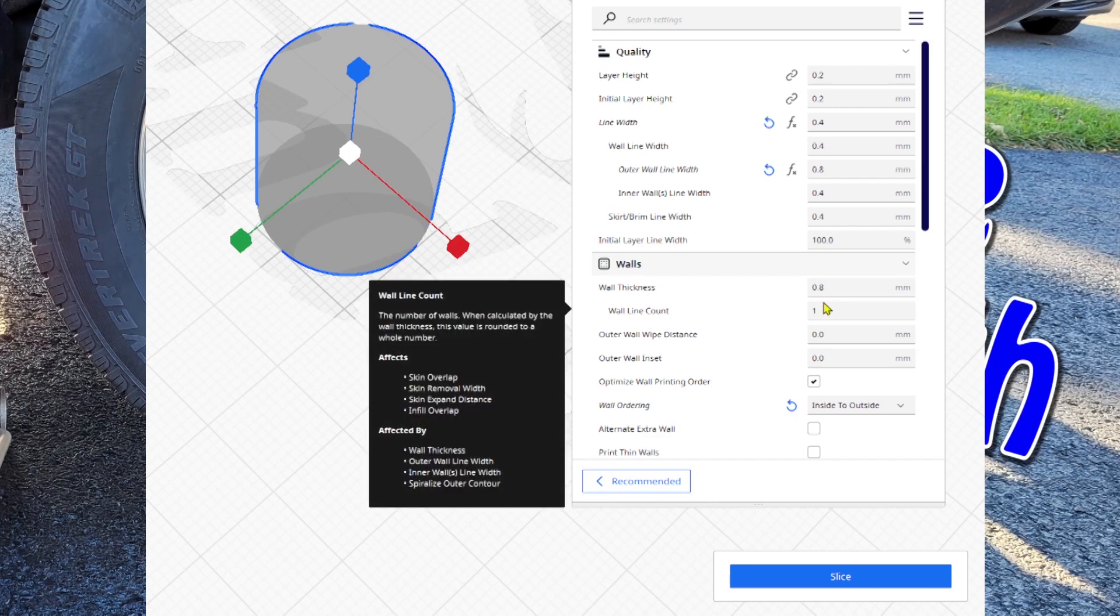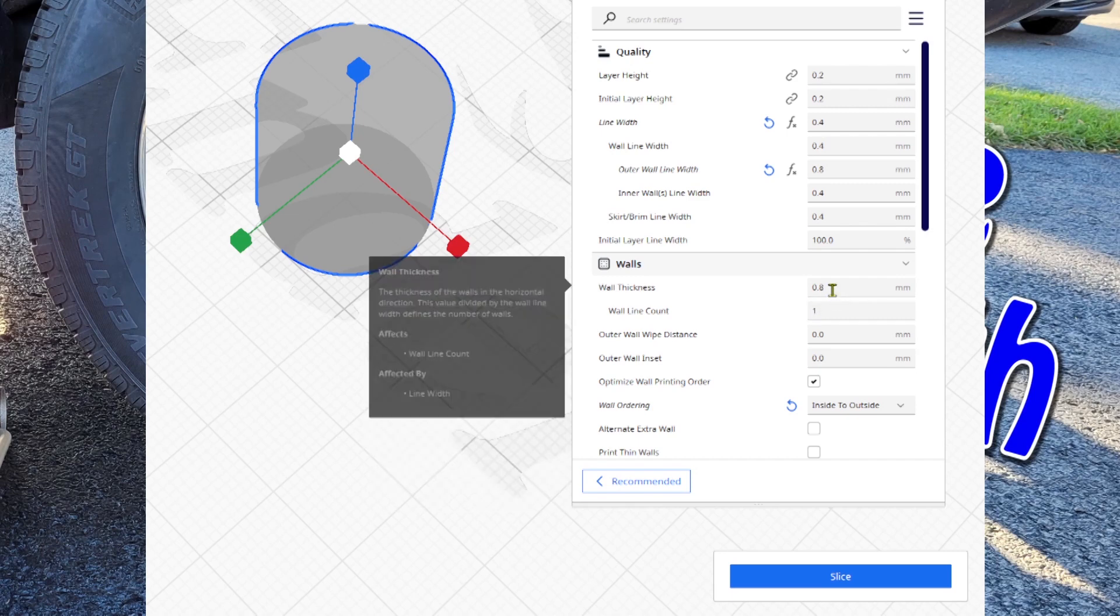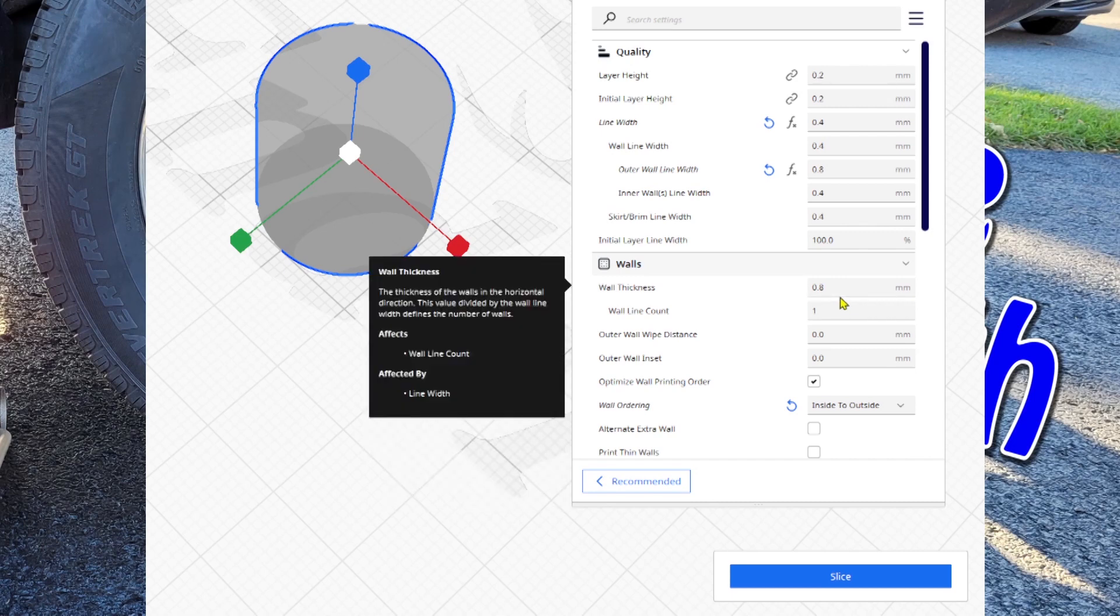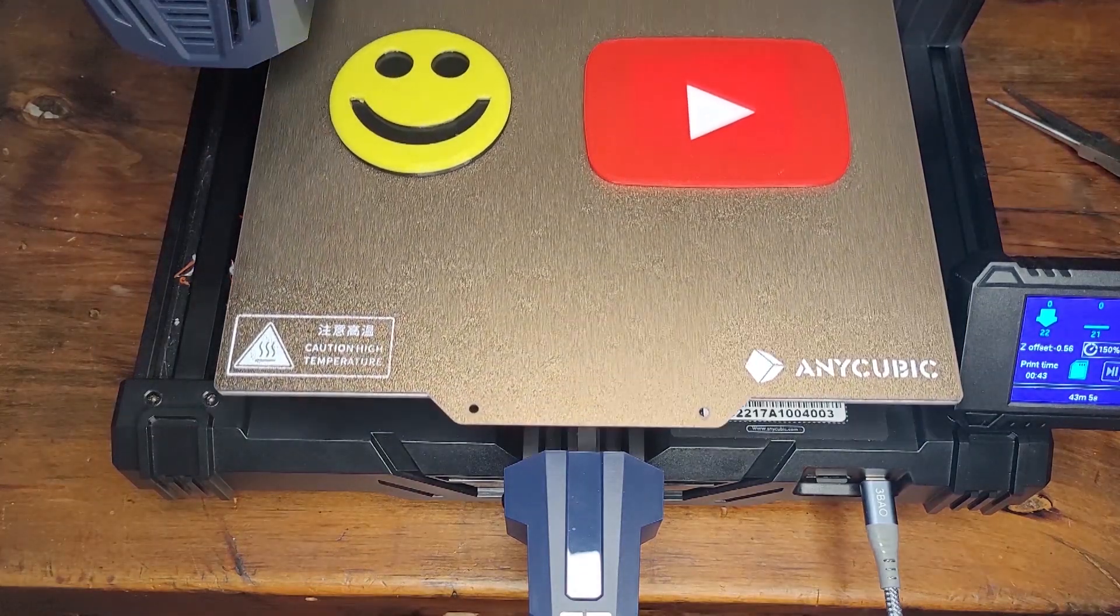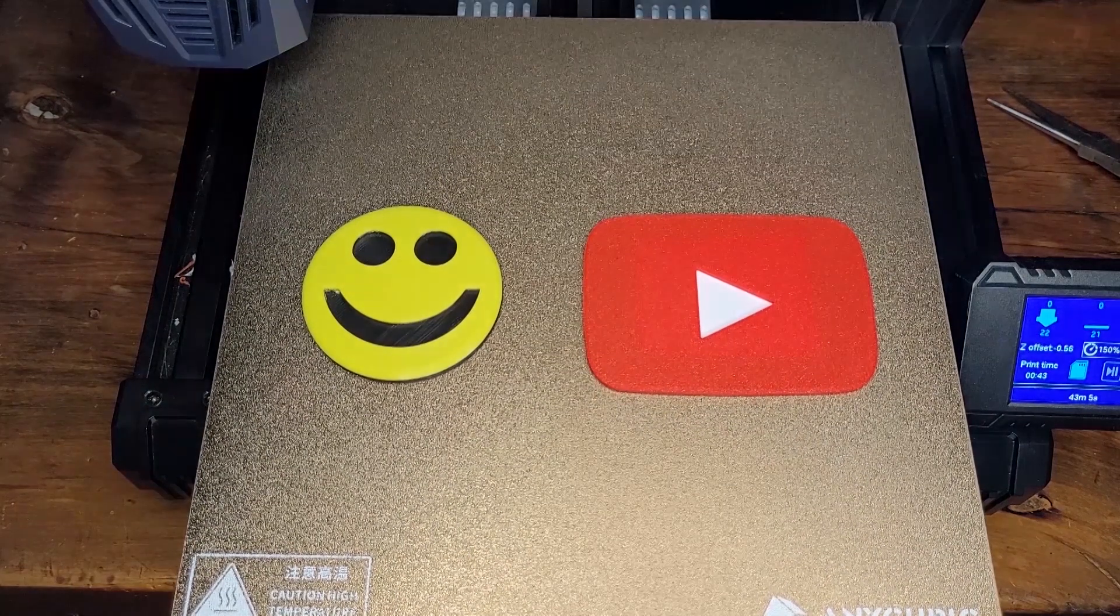If you want to take advantage of having an outer wall that's 0.8, you're going to have to come down and change the wall line count. So you change it to one here—usually it defaults out at 2—and here's the wall thickness. So that's one way that you can go and customize and have some strength and save some time. Anyways, I hope that you enjoyed this video.